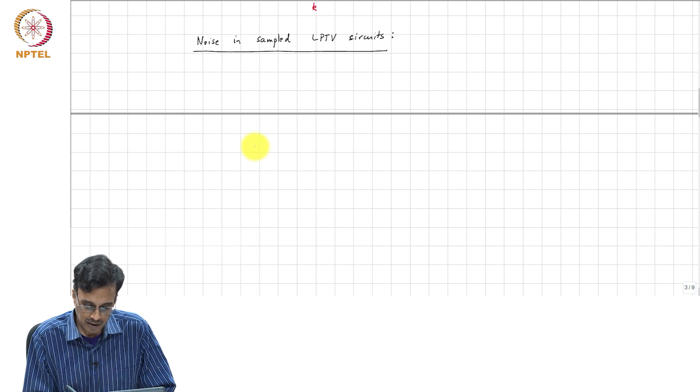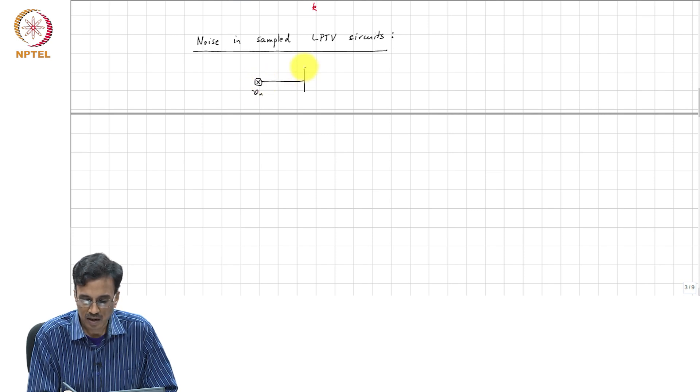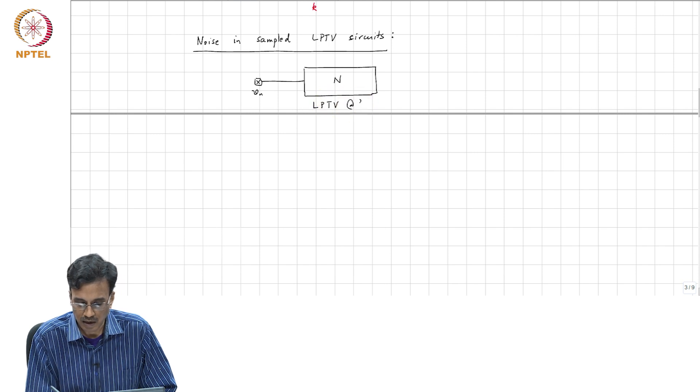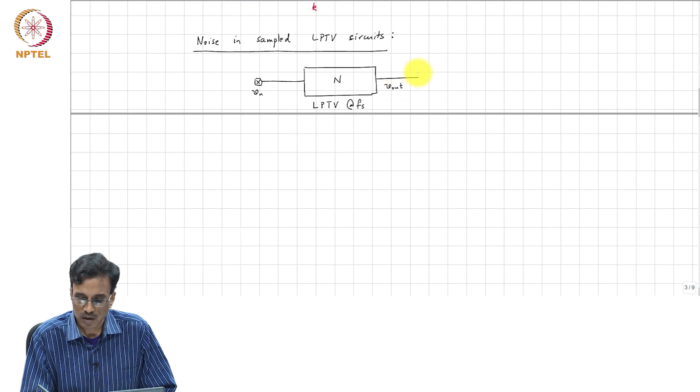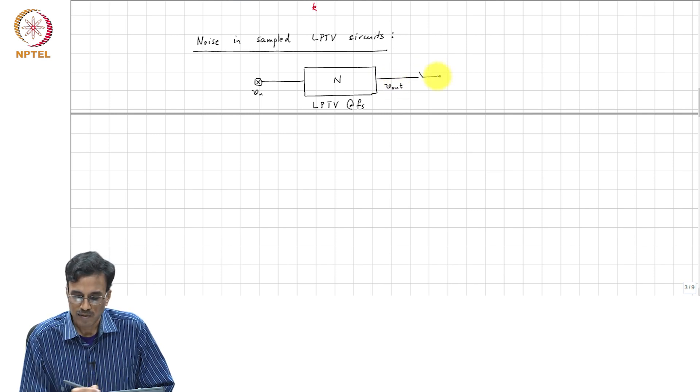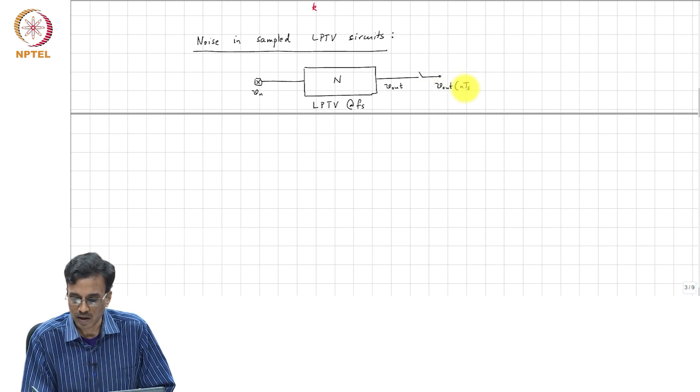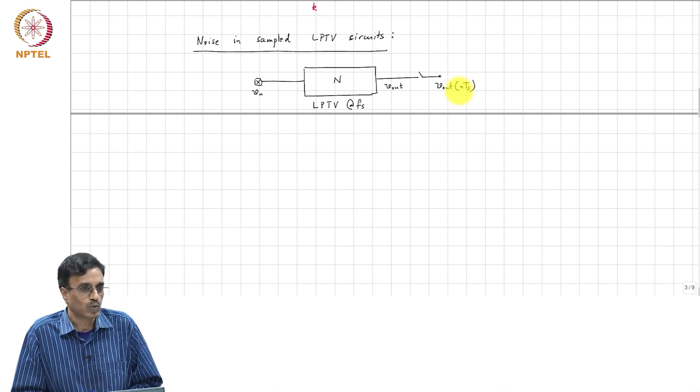The idea is the following: we have an input which is V_N, and then this is a network N which is LPTV at F_S, and this is V_out. We are interested in the statistical properties of V_out of N times T_S. Most of the time we are interested only in the mean square value of the noise.